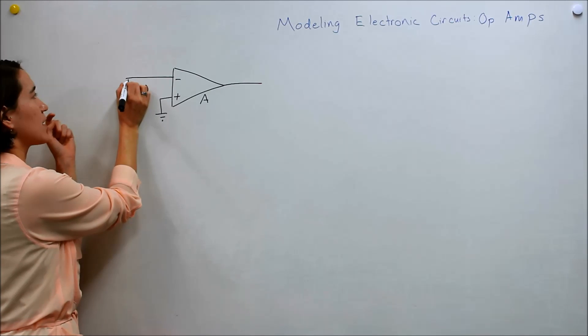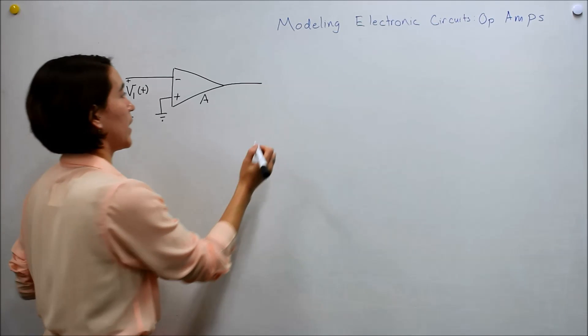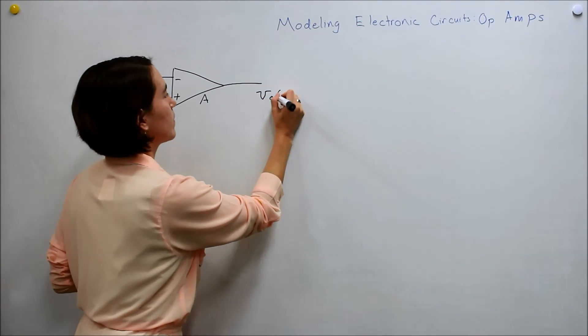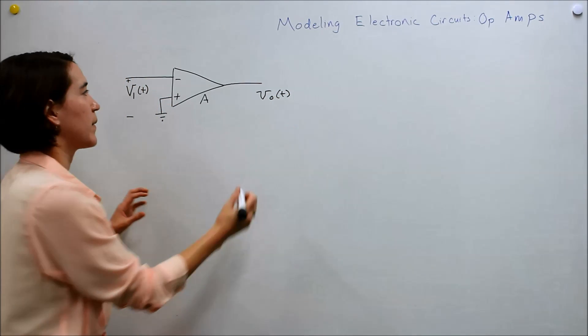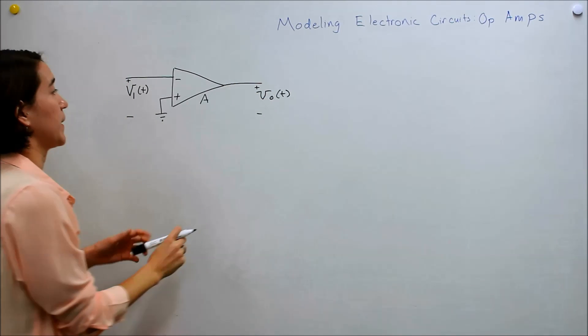And just to remind you, this is from this positive voltage from this node to ground. So that's the voltage, V1. And then we're going to call this Vout. It's a signal in the time domain. And again, this is from this voltage to ground. So from here to there.